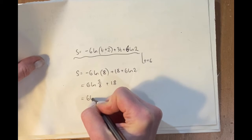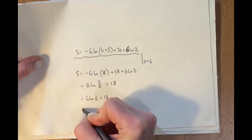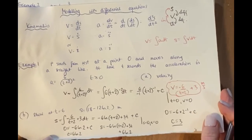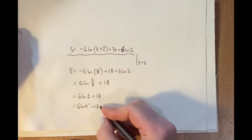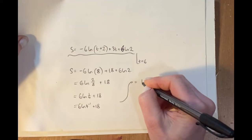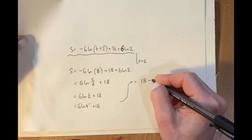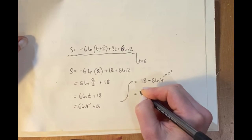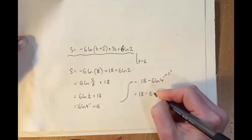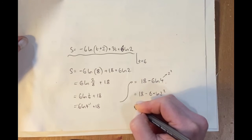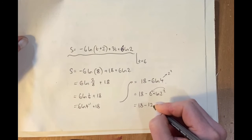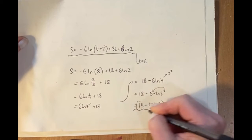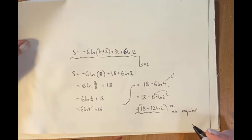So we have 6 ln(4⁻¹) + 18. Checking the required form — 18 − 12 ln 2 — we bring the minus sign in front: −6 ln 4 = −6 ln 2² = −6 × 2 ln 2 = −12 ln 2. So the answer is 18 − 12 ln 2 metres, as required.